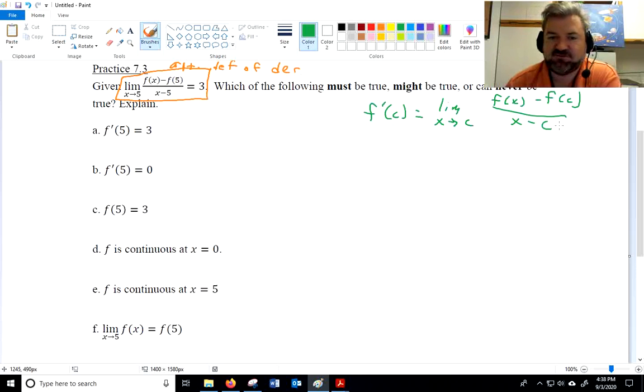Alright, so what this is telling me this here, this limit as x approaches 5 of f of x minus c of 5 or x minus 5 that is f prime of 5 and it's telling me that it's 3. That's what that says. This must be true because that's exactly what it's saying. Then it says f prime of 5 equals 0. No, never, because we already know what it is. It's 5, it's 3, excuse me.